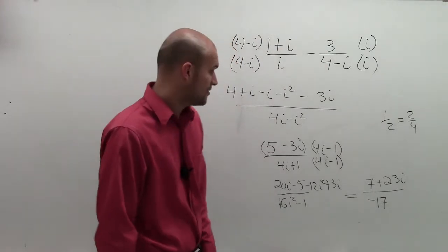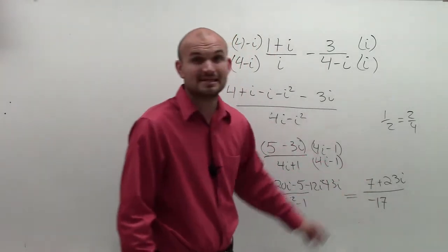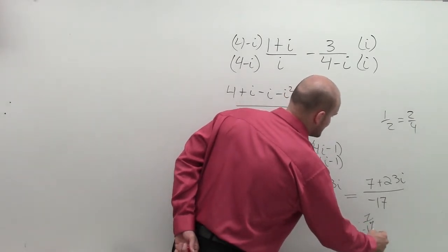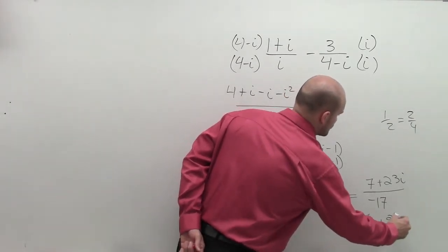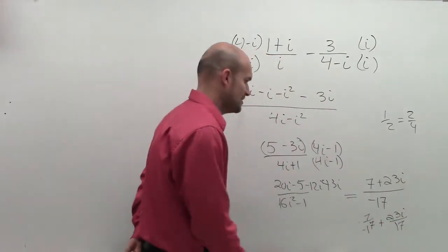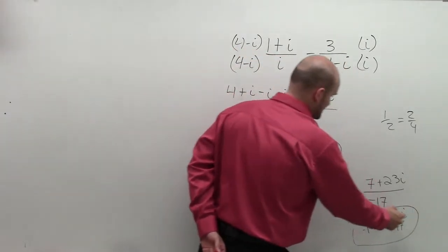Now, it's still not in complex form, but what I can do is I can divide the 17 into both of these terms. And my final answer would be negative 7 over 17 plus 23i over 17. So there you go, ladies and gentlemen. That's it. That's your final answer.